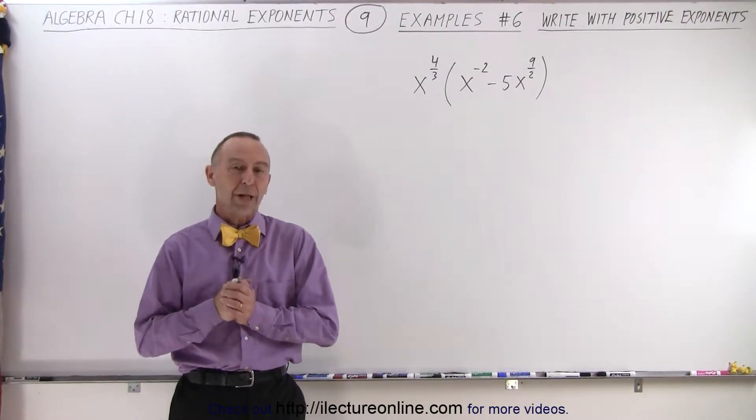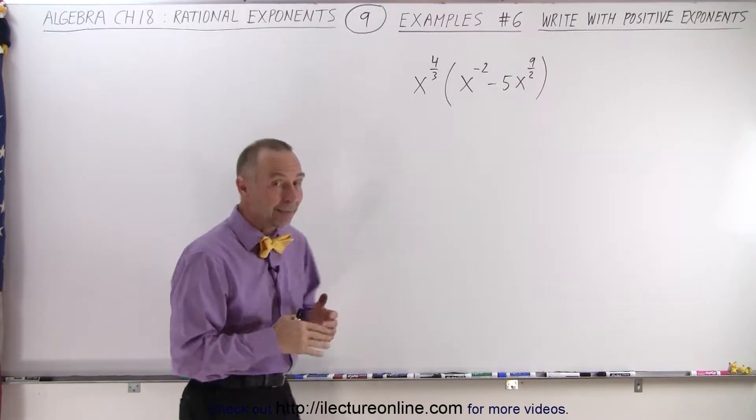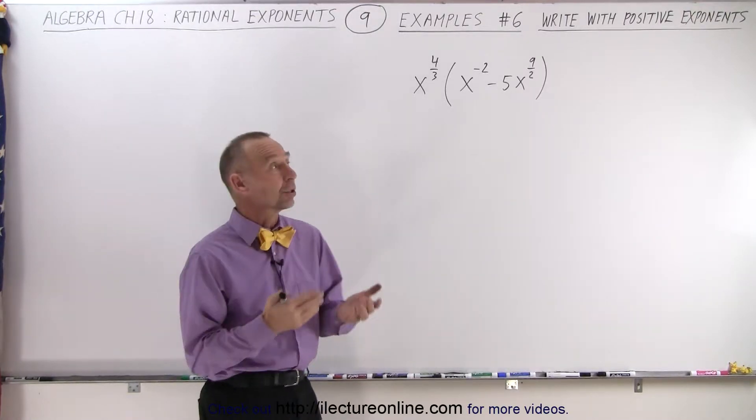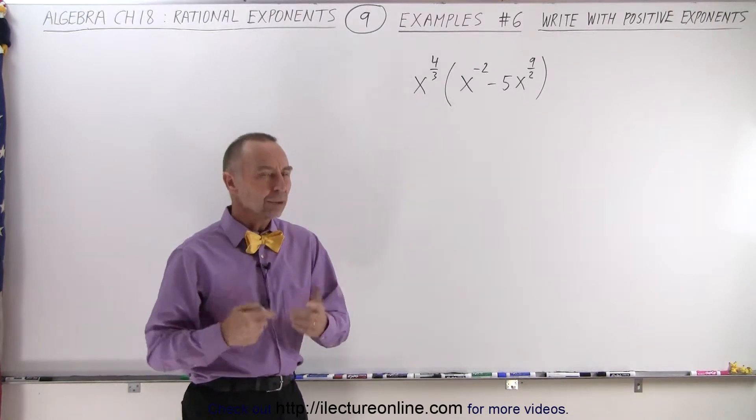Welcome to our lecture online. Here we're multiplying x to the 4/3 power times a binomial. The binomial contains at least one rational exponent. So how do we do that?